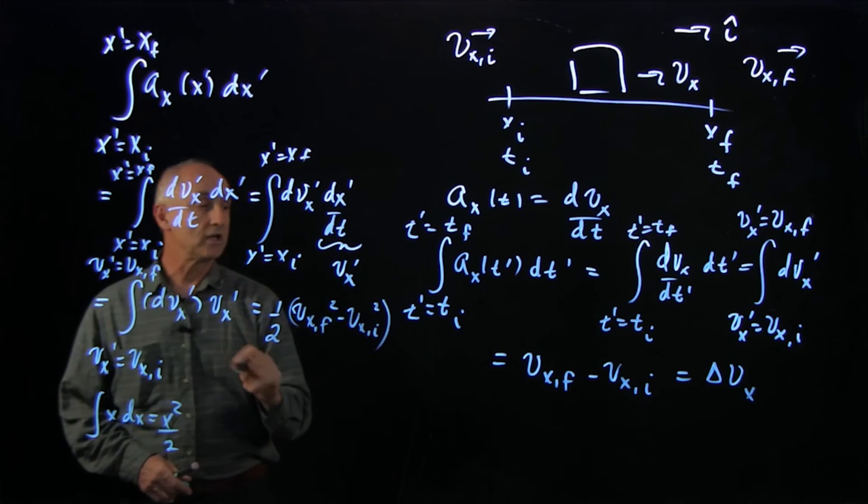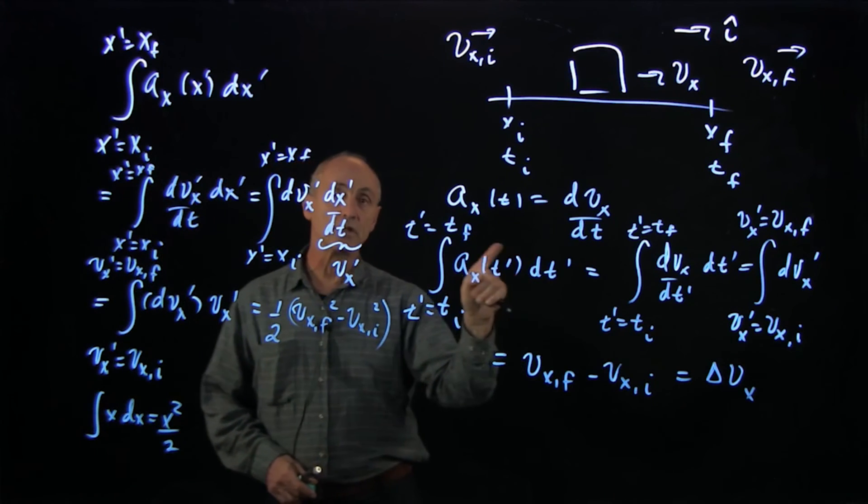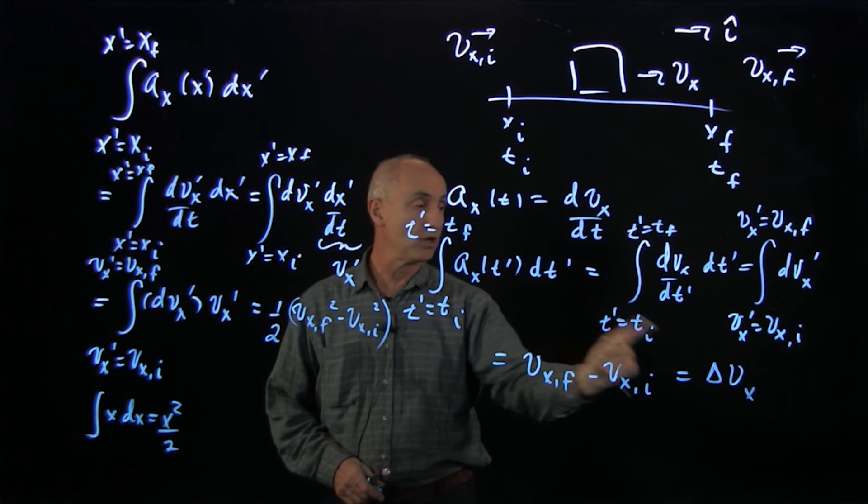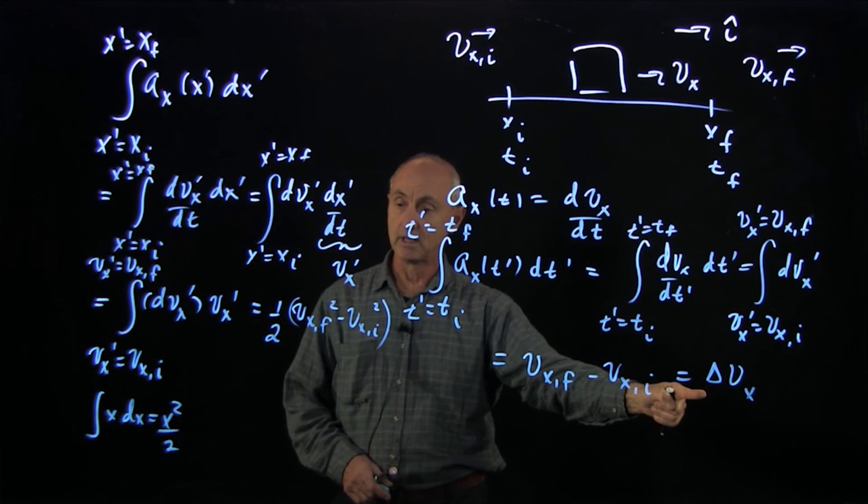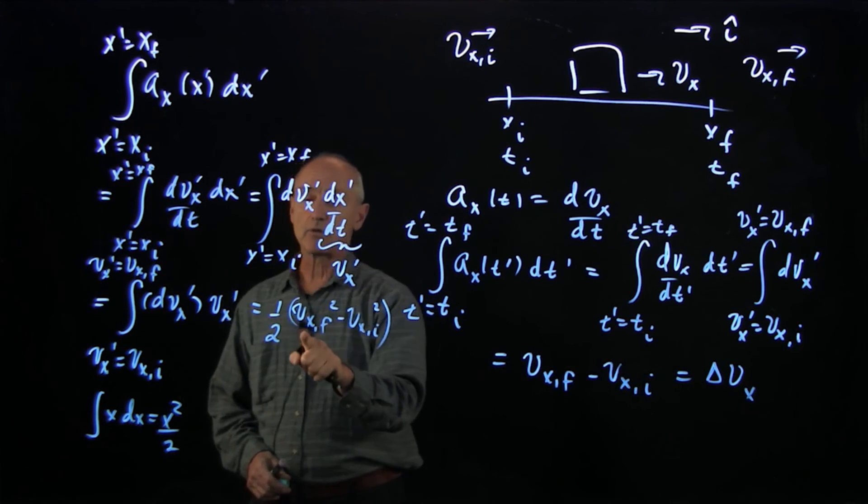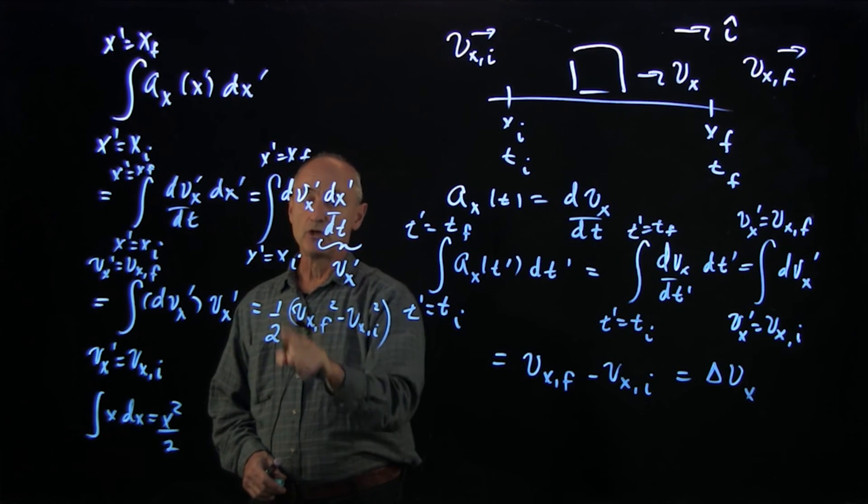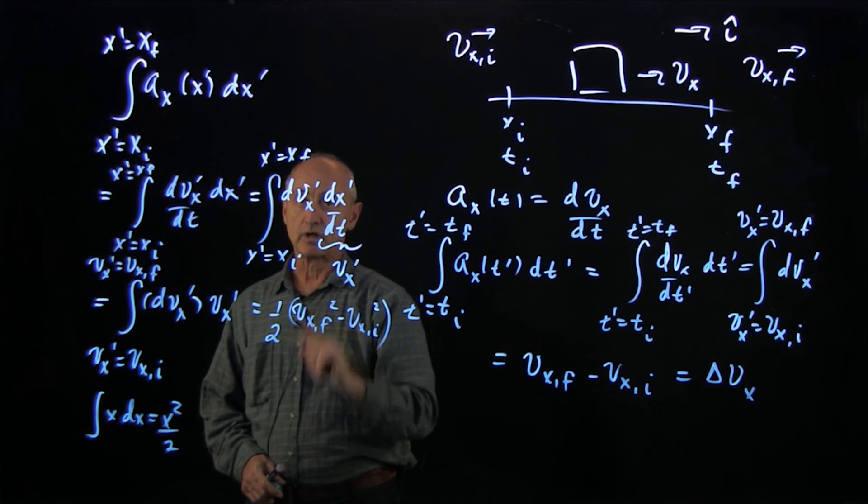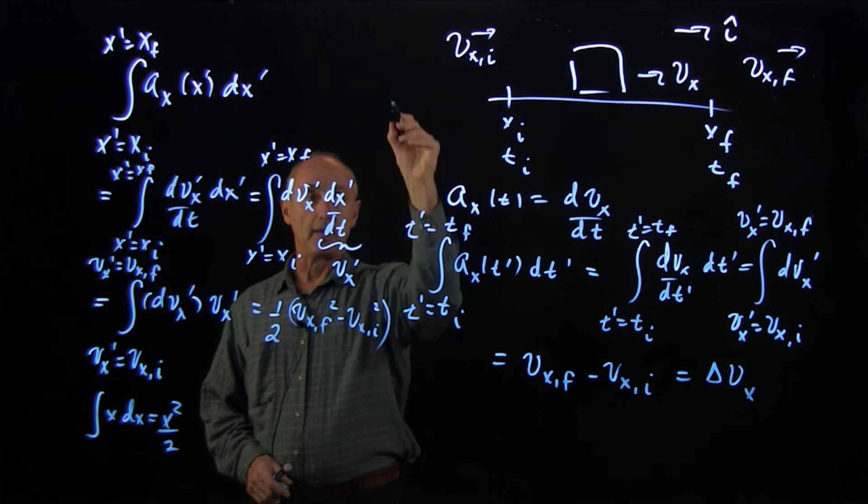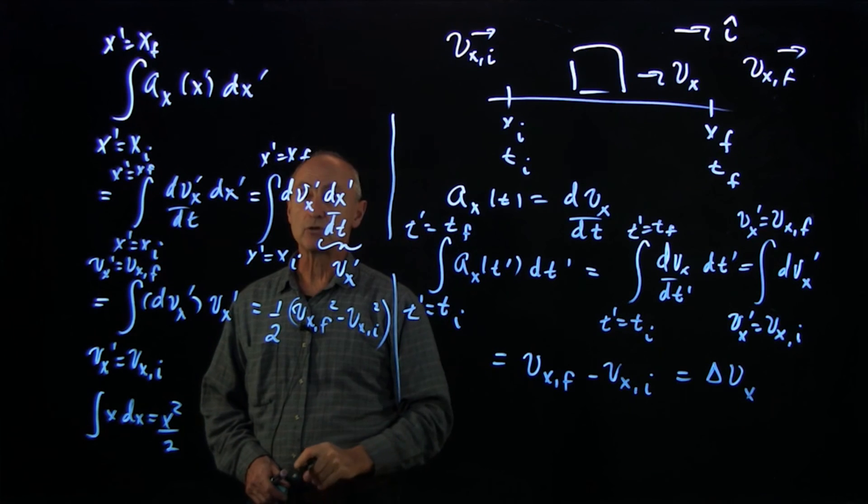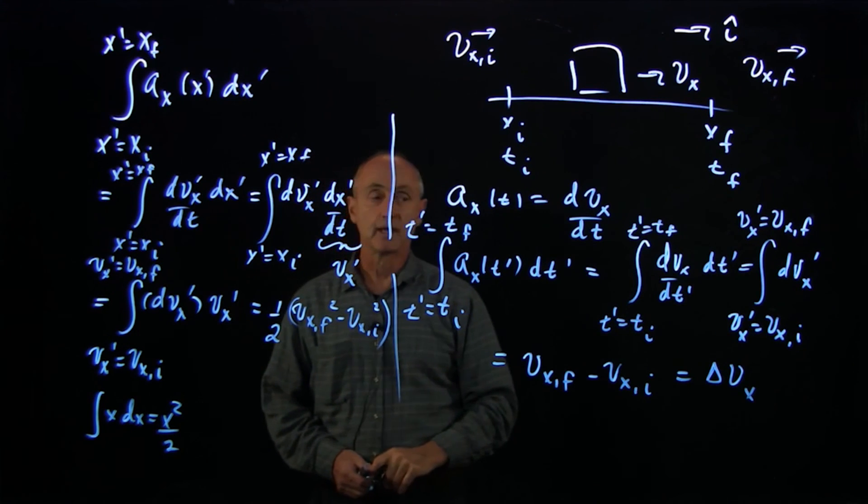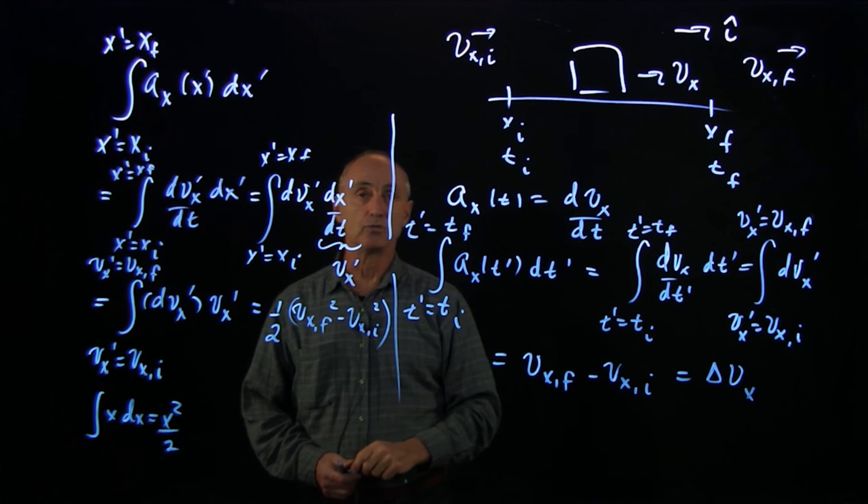And so what we see here is two fundamentally different facts that if you integrate acceleration with respect to time, you get the change in velocity. But if you integrate acceleration with respect to space, you get 1/2 times the change, not of velocity, but of the x component of the velocity squared. And both of these facts are central to how we'll analyze the concept of work and how we applied Newton's second law.